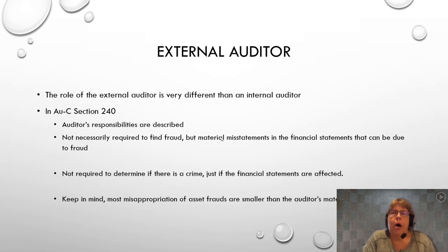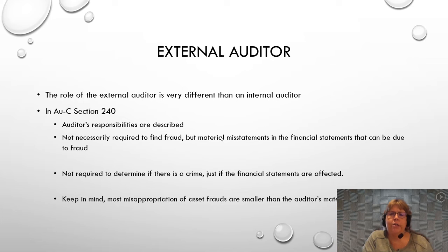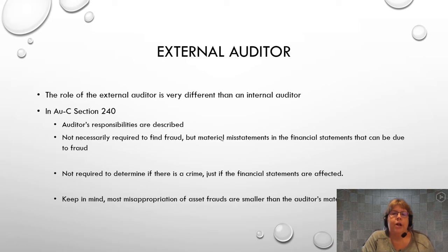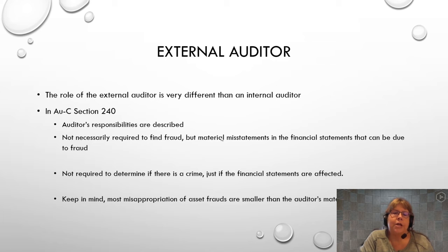We need to keep in mind what the role of the external auditor is. It is very different than just an industry accountant or an internal auditor. Their primary purpose is to determine that the financial statements do not have any material misstatements, and that is far different than finding a fraud. Frauds can be large enough to cause material misstatements, but there are also many frauds that are much smaller in nature.